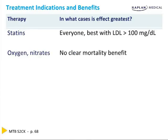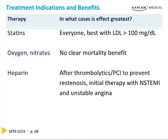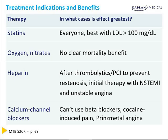Oxygen and nitrates have no clear mortality benefit — we just give them. Oxygen is particularly useless. Heparin will not reopen a blood vessel; it is given after thrombolytics and angioplasty to keep the vessel open briefly — for about a day. Heparin is very useful for non-ST elevation MIs or other acute coronary syndromes to prevent clot formation, but it will not break open a clot. Calcium channel blockers have not been shown to lower mortality in any form of acute coronary syndrome.